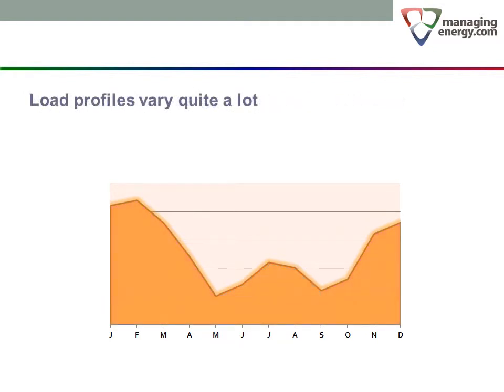The shape of the annual load profile depends on what equipment loads are connected. This meter serves some base load equipment in addition to heating and cooling systems. A building without cooling equipment would be heating sensitive but would show no summer peak at all. This profile is common for natural gas meters serving space heating and domestic hot water.